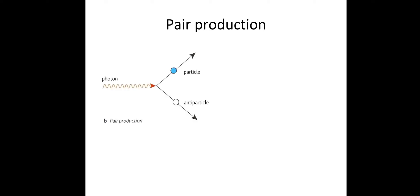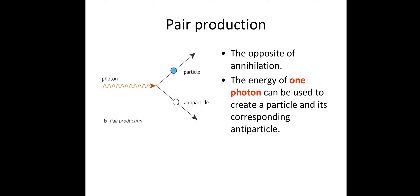So pair production. This is where a photon will spontaneously turn into a particle and antiparticle — it's the opposite of annihilation. The energy of a single photon can be used to create a particle and its corresponding antiparticle, and then the photon ceases to exist after the pair production event.